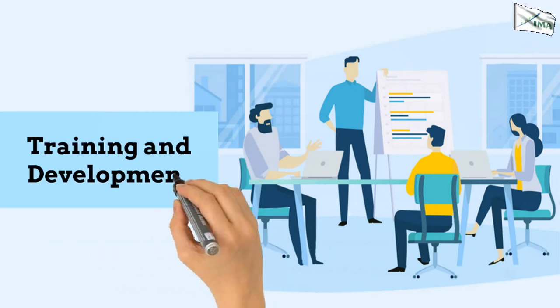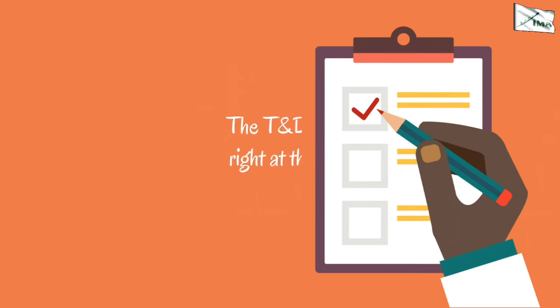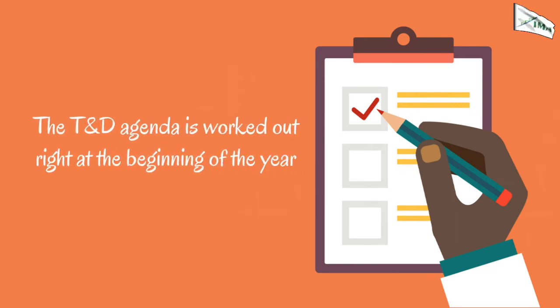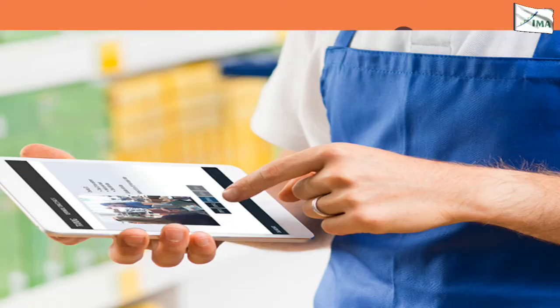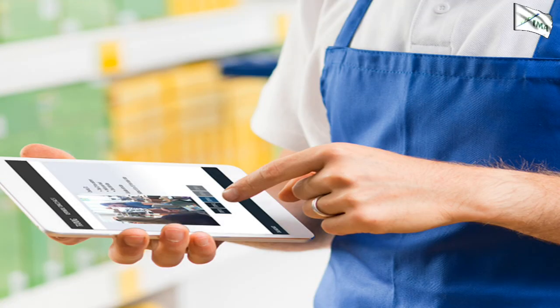Next, we look at training and development. The T&D agenda is worked out right at the beginning of the year. This may happen after the review of the last year's performance of the employee. Using technology, you can now totally re-engineer the training and development.